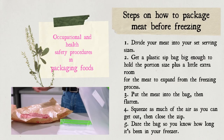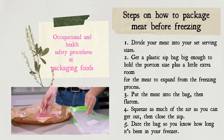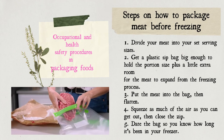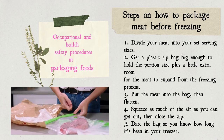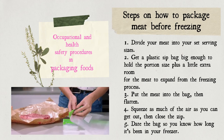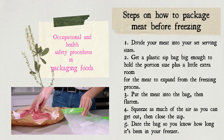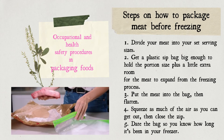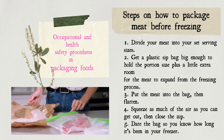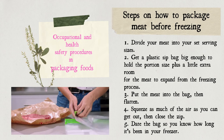For occupational health and safety procedures in packaging foods, here are the steps on how to package meat before freezing. Step 1: divide your meat into your set serving sizes. Step 2: get a plastic zip bag big enough to hold the portion size plus a little extra room for the meat to expand from the freezing process. Step 3: put the meat into the bag then flatten. Step 4: squeeze as much air as you can get out, then close the zip. Step 5: date the bag so you know how long it's been in your freezer.